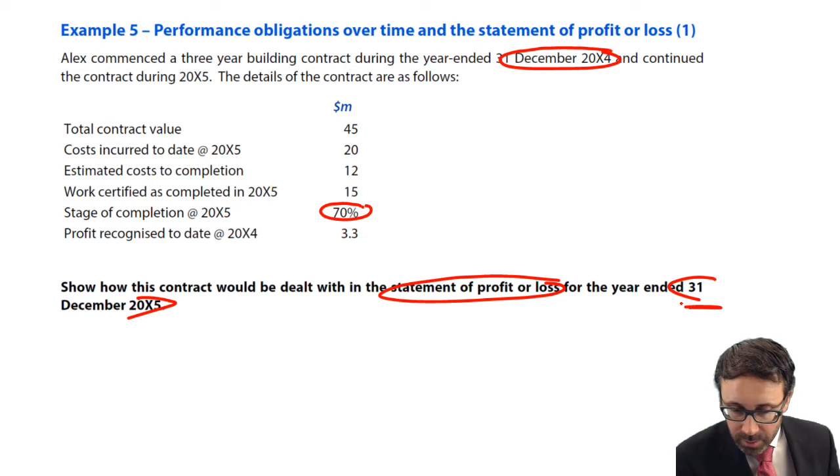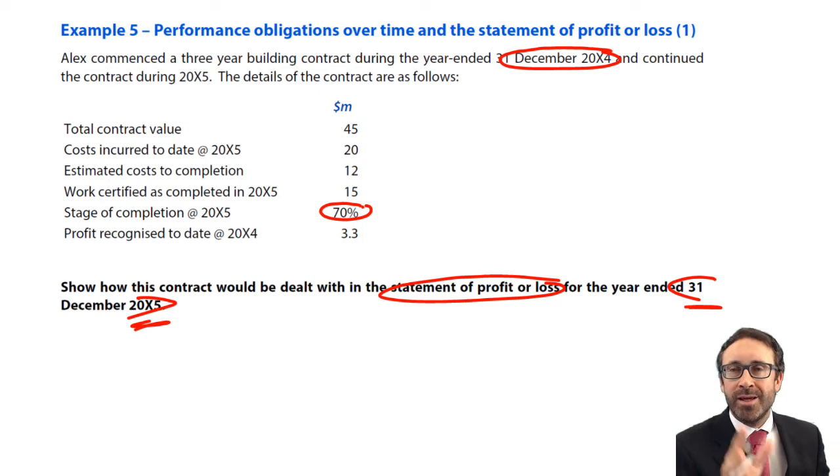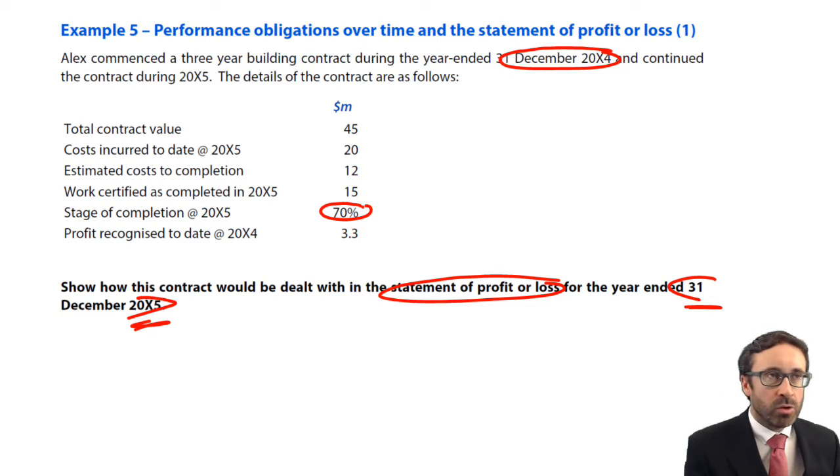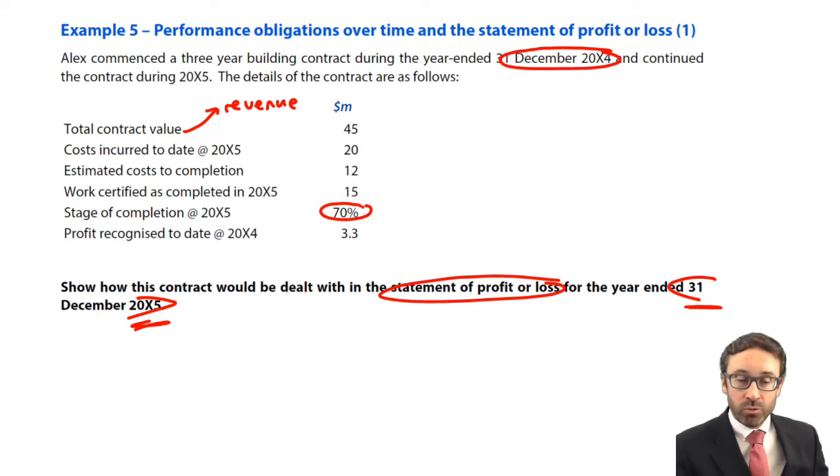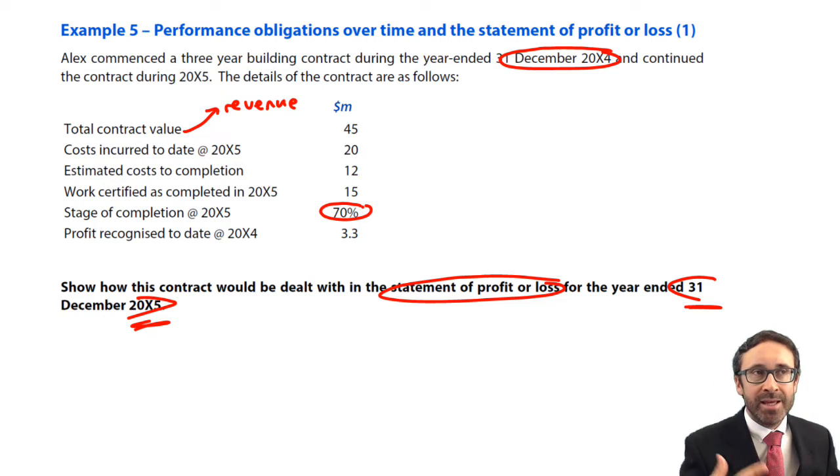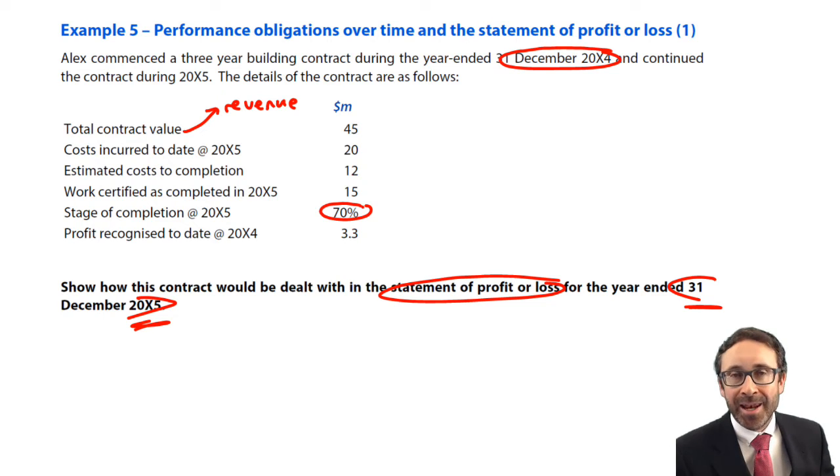So we know that we're going to have to recognize any revenue and costs based on a stage of completion over time. And that was started during December X4. So that was in the previous accounting period. So we have a three-year contract started in X4. We're looking for what happens in X5. So things will already have been recognized in the previous year in X4. What do we need to recognize there with regards to X5? It goes through there and tells us as you look at the information. So we've got some figures there in millions. We're given the total contract value.